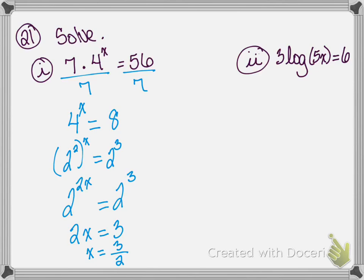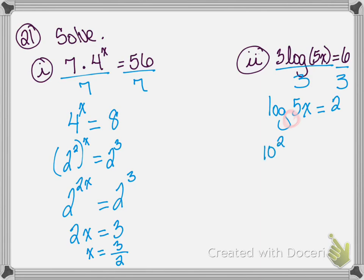For our next one, we have 3 log of 5x equals 6. First I divide both sides by 3, leaving log of 5x equals 2. In order to solve this, I rewrite it as an exponent. When there is no base written, a base of 10 is assumed. So I have 10 to the second power equals 5x. 10 squared is 100. So 100 equals 5x — I divide both sides by 5 — and my x value is 20.